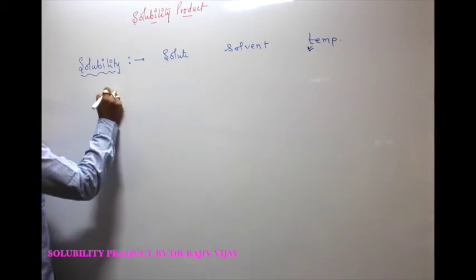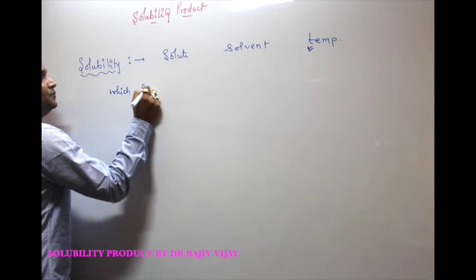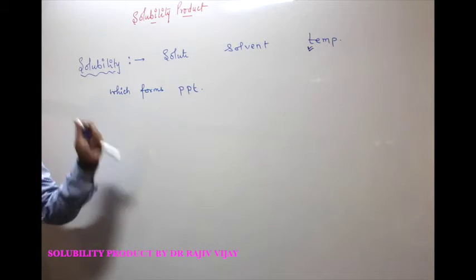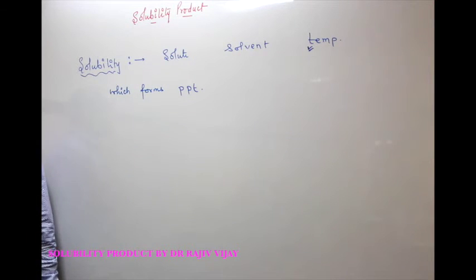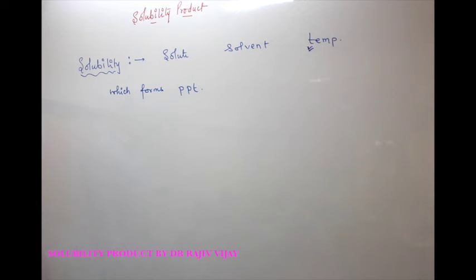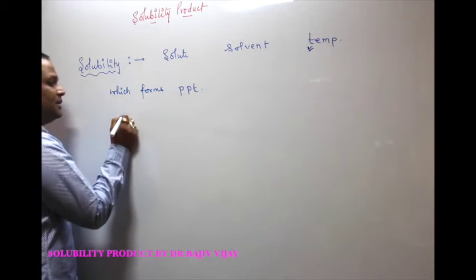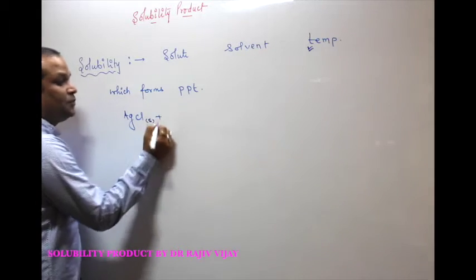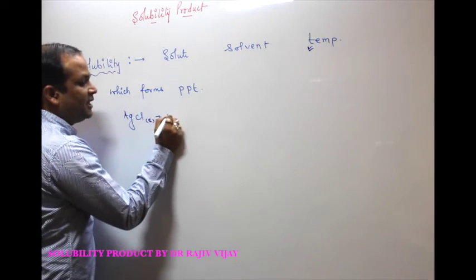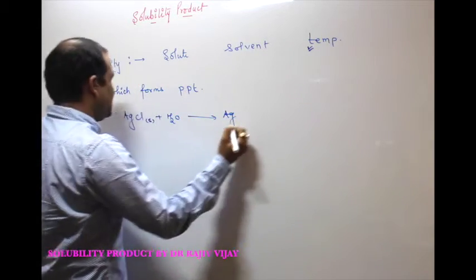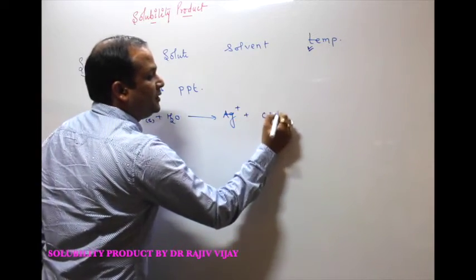The salts we discuss in solubility product are those which form a precipitate (PPT) at the bottom of the test vessel. For example, AgCl is a solid precipitate. When we dissolve AgCl in water, it dissociates into Ag⁺ and Cl⁻ ions.